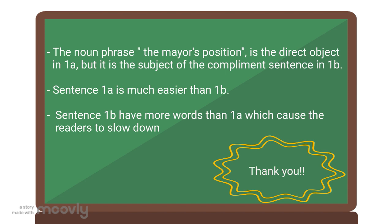As you saw earlier, the first sentence is much easier to disambiguate compared to the second sentence. This is because sentence 1b has more words than 1a, which then causes readers to slow down while reading. This is the end of the constraint-based model. I hope that as you watch this video, you will be able to learn something new. Thank you.